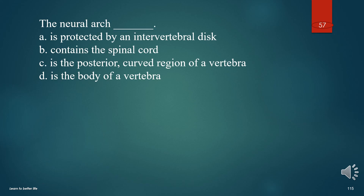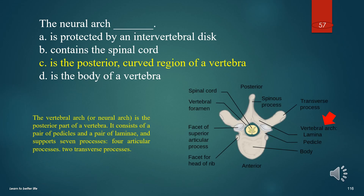The neural arch: A. Is protected by an intervertebral disc. B. Contains the spinal cord. C. Is the posterior, curved region of a vertebra. D. Is the body of a vertebra. The answer is C. Is the posterior, curved region of a vertebra. The vertebral arch, or neural arch, is the posterior part of a vertebra. It consists of a pair of pedicles and a pair of laminae, and supports seven processes, four articular processes, and two transverse processes.